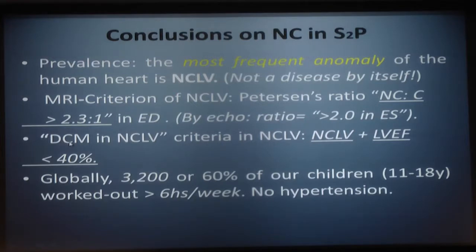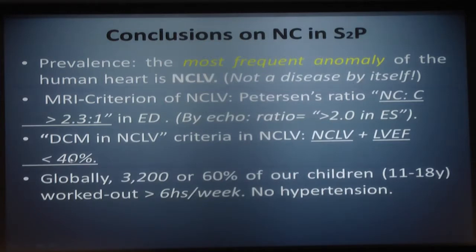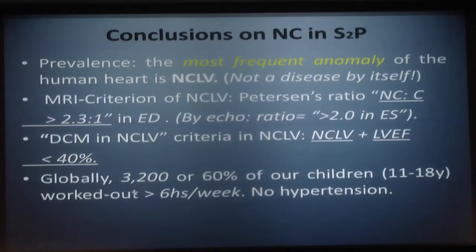Among our candidates for sports, 100% had more than 40% ejection fraction. No one had severe cardiomyopathy, but mild cardiomyopathy was seen in 10% of these kids. Interestingly, 3,200 — or 60% — of our candidates reported working out more than six hours a week with the equivalent of running.